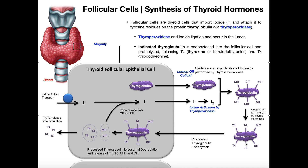At this point in the lumen, we have a thyroglobulin protein with lots of T4s and T3s, plus some leftover MITs and DITs that didn't get iodinated three or four times. Thyroglobulin is then imported back into the follicular cell, where proteases completely break the protein down into its individual amino acids, releasing all of the T4s and T3s. These are just modified amino acids, but they're thyroid hormones, and they're dumped into the blood and go to their various tissues to exert functions.